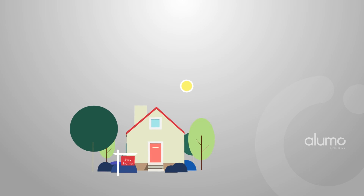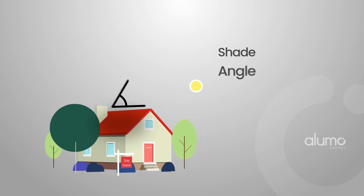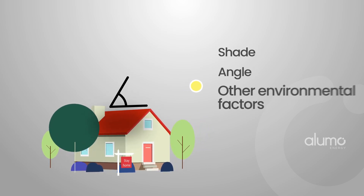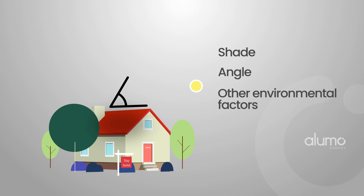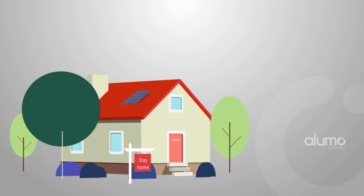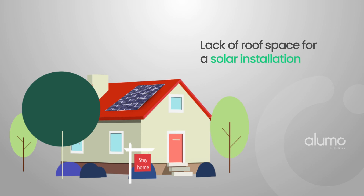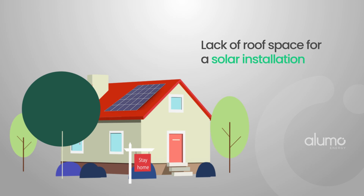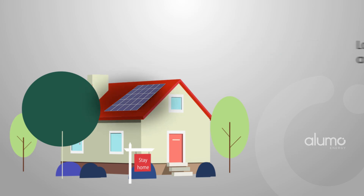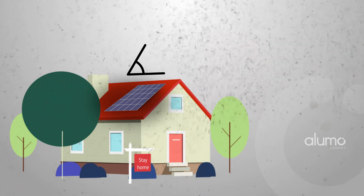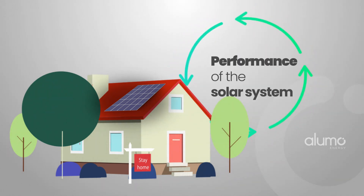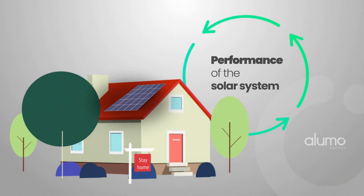Next to consider are elements such as shade, angle and other environmental factors. One of the biggest limitations for any solar solution would be the lack of ideal roof space for a solar installation. Limited roof space, any significant shade cast onto solar modules, the angle of the location, and other factors such as dust and temperature will determine the performance of the solar system.